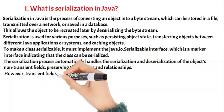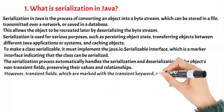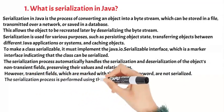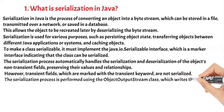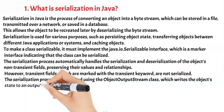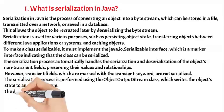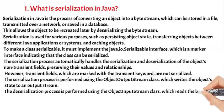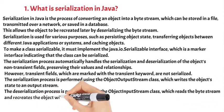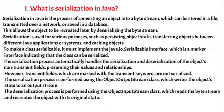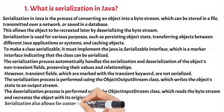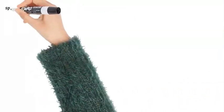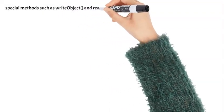However, transient fields, which are marked with the transient keyword, are not serialized. The serialization process is performed using the ObjectOutputStream class, which writes the object's state to an output stream. The deserialization process is performed using the ObjectInputStream class, which reads the byte stream and recreates the object with its original state.